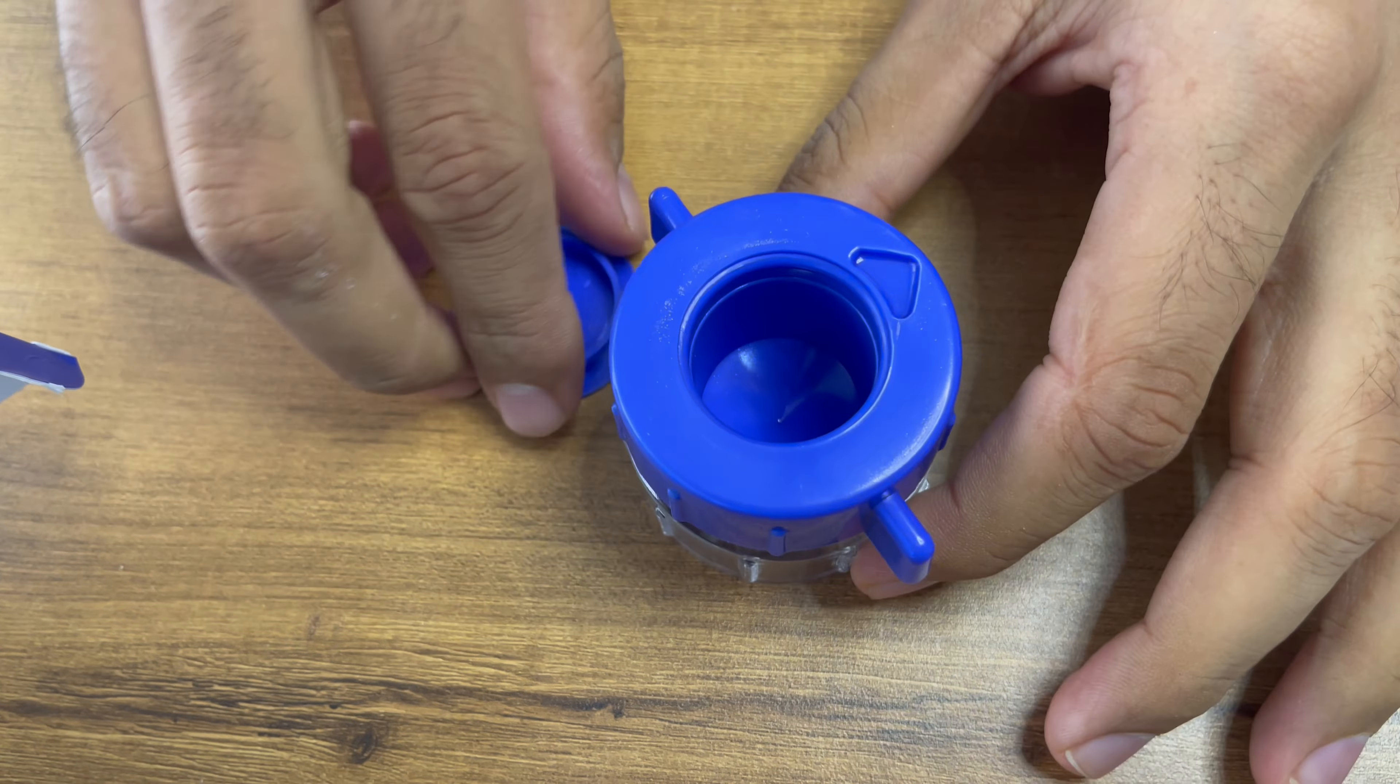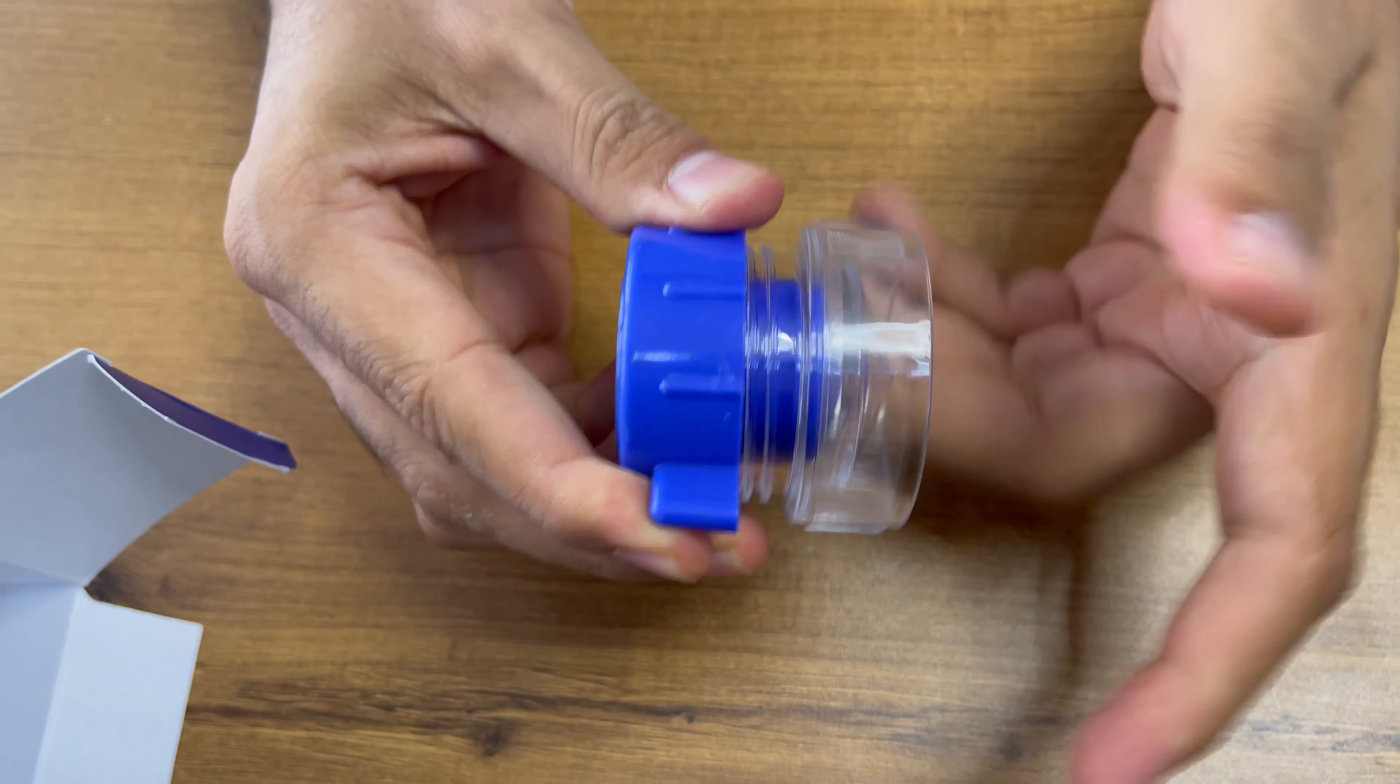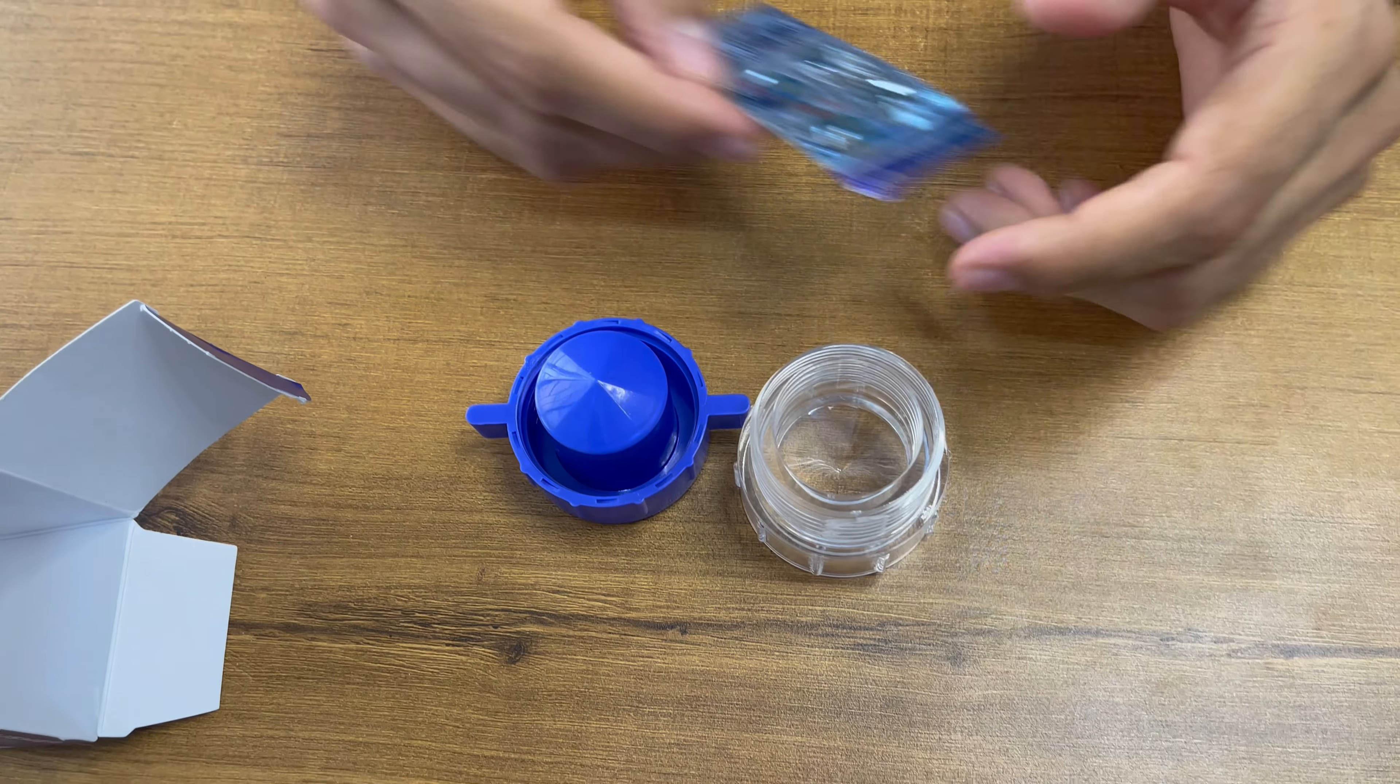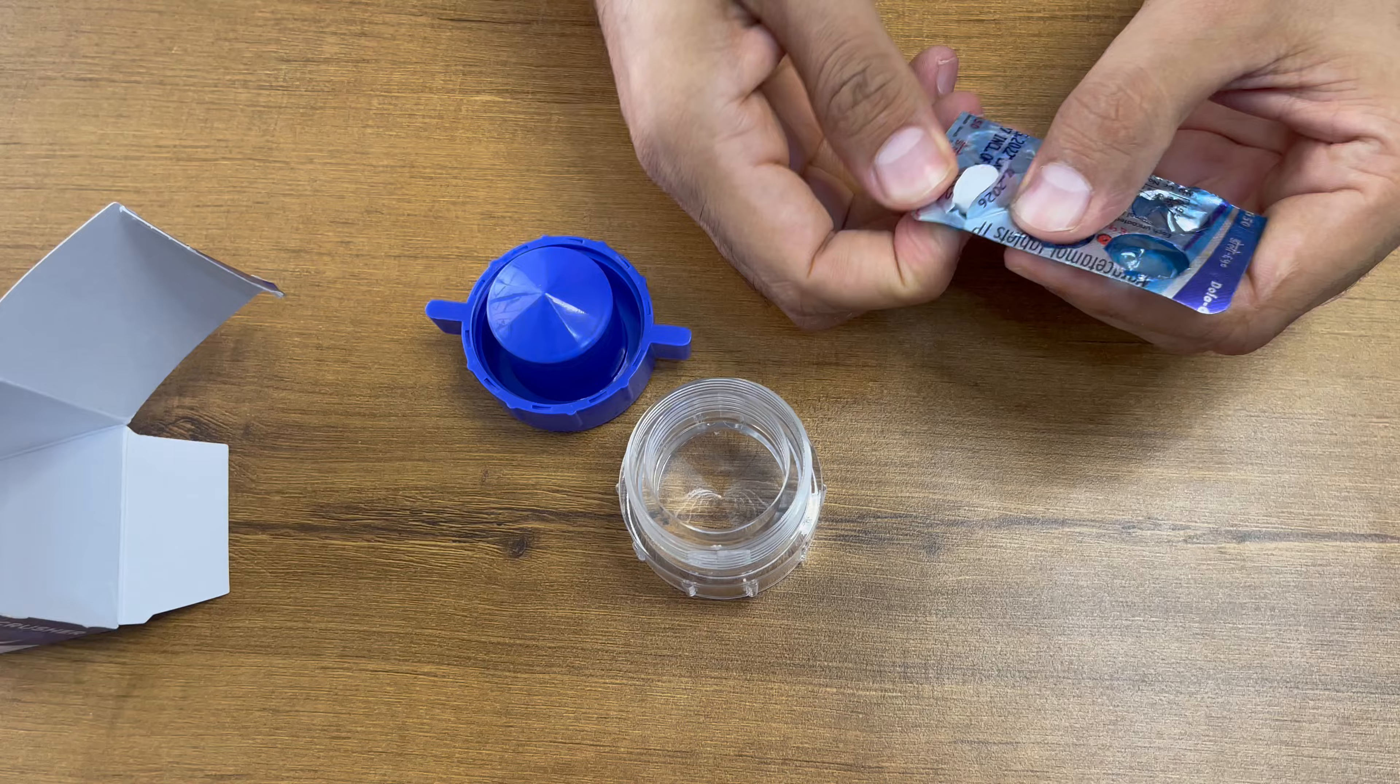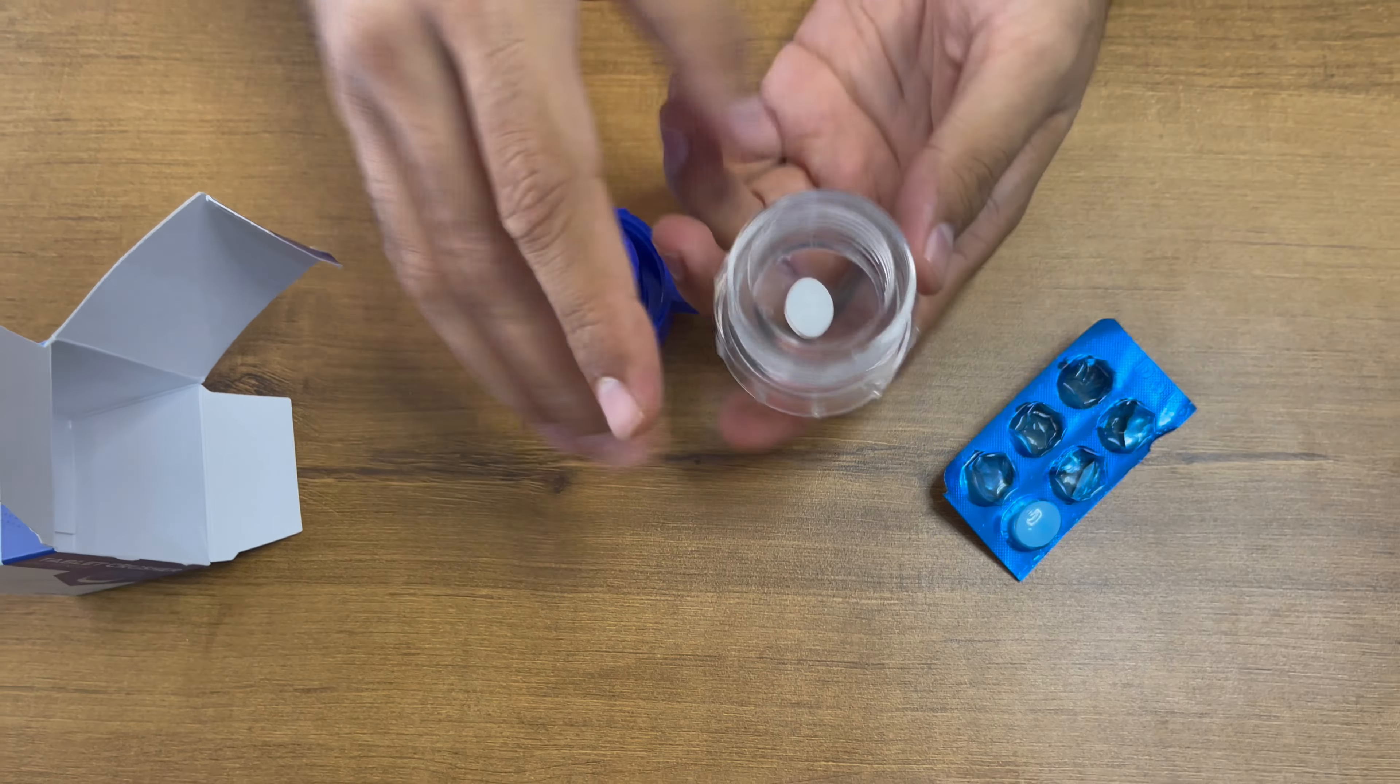You can just close it like this. Now we are going to open the device. We can open it like this and we are taking the tablet here. We have taken this Dolo 650 milligram tablet - the 650 milligram tablet is quite a large one.